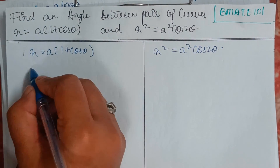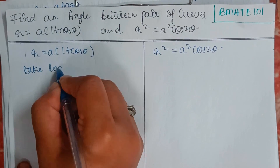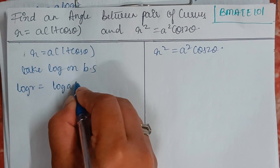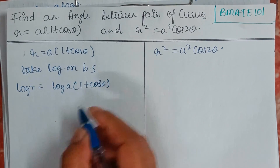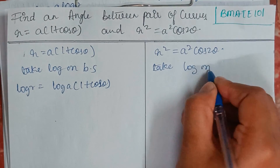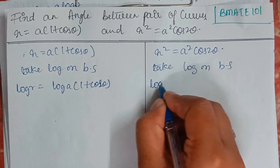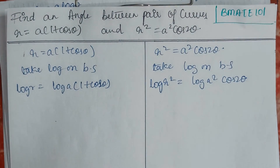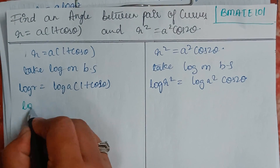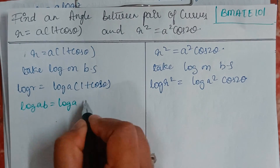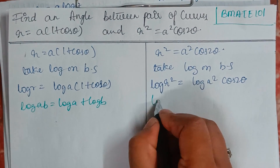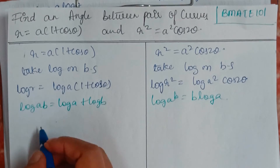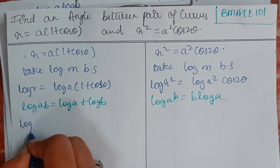Let's start by taking logs on both sides. So it becomes log r equals log of a·(1 + cos θ). Similarly, we take log on both sides of the other equation, so it becomes log r² equals log of a² cos 2θ. If you know the logarithmic expansions: log(a·b) is log a + log b, and log a^b is b·log a.